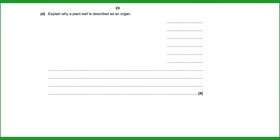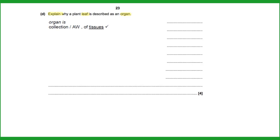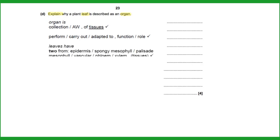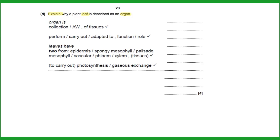A four-mark question asks why a plant leaf is described as an organ. An organ is a collection of tissues performing a particular function. The plant leaf fulfills this definition: it contains different named tissues — spongy mesophyll, palisade mesophyll, vascular tissue (phloem and xylem), epidermis — which work together to carry out photosynthesis. Naming the tissues and linking them to function is needed to gain all four marks.